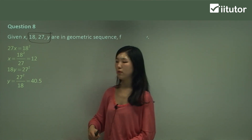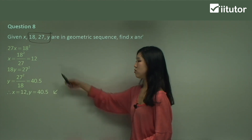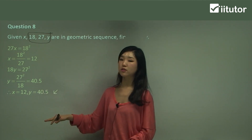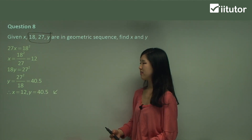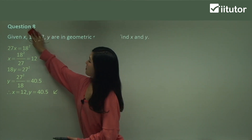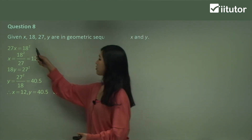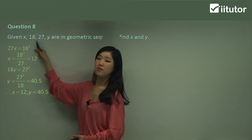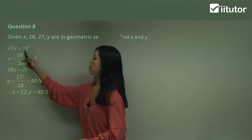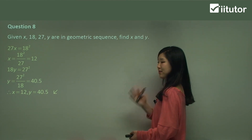Now let's find y using the next 3 numbers: 18, 27, y. Middle number squared: 27 squared equals 18 times y. Divide both sides by 18, and 27 squared divided by 18 simplifies to 40.5. So y equals 40.5. We found x and y individually by first looking at the first 3 numbers and then looking at the next 3 numbers. We simply applied that rule two times in one question. That's question 8.